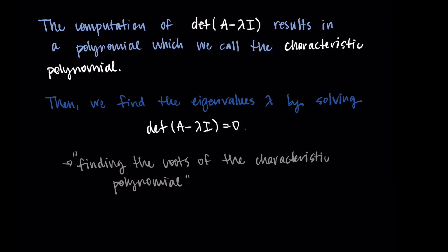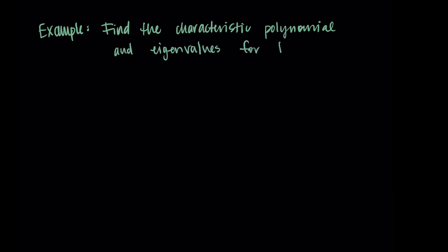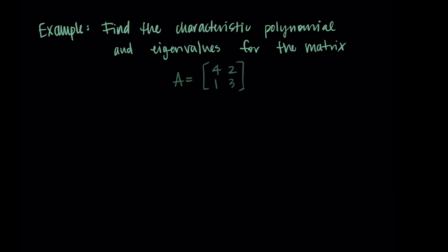Let's try an example where we practice this vocabulary and see it in action. We'll find the characteristic polynomial and eigenvalues for the matrix A equals [4, 2; 1, 3]. This is the same matrix from the previous video, so if you've done that work recently, you probably already know the eigenvalues. But we're going to start fresh and go through the process.